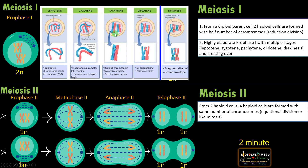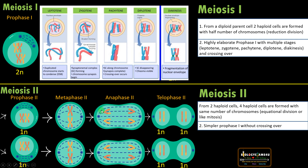During Pachytene, there is crossing over between homologous chromosomes — that is, the exchange of segments between homologous chromosomes — which leads to recombination and contributes to genetic diversity or genetic variation. Whereas in meiosis II, prophase is simple, without crossing over.